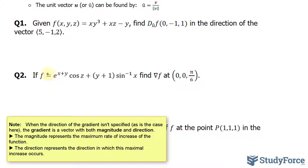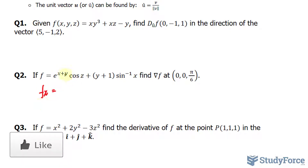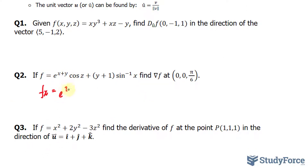Our function is f equals e to the power of x plus y, times cosine z, plus (y plus 1) times arcsin(x). Starting with the partial derivative of f with respect to x: cosine z is a constant. We have e to the power of x plus y; the derivative of x plus y with respect to x equals 1 (y becomes 0), and we also have cosine z as a factor.